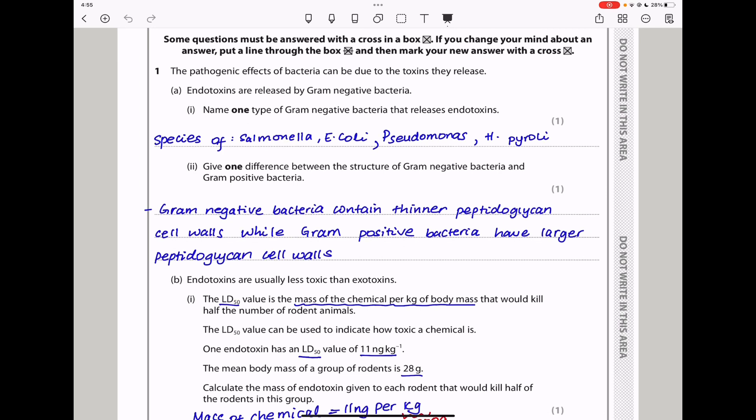Next they say give one difference between the structure of gram-negative bacteria and gram-positive bacteria. The major difference is in the peptidoglycan layer. Gram-negative bacteria contain thinner peptidoglycan cell walls, while gram-positive bacteria have larger peptidoglycan cell walls.